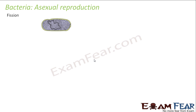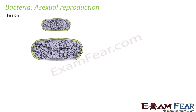Let us suppose this is a bacterium. This bacterium has one copy of a chromosome — the black colored structure shown here denotes the chromosome, which is that part of a cell that carries the genetic material. Now, this bacterium makes a copy of its chromosome. So earlier there was one chromosome, and now it makes a copy, so now it has two chromosomes.